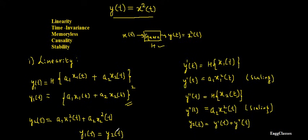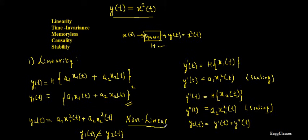Now I test whether y1(t) equals y2(t). Since y1(t) = [a1·x1(t) + a2·x2(t)]² is not equal to y2(t) = a1·x1²(t) + a2·x2²(t), the system is non-linear.